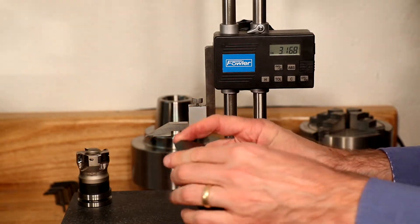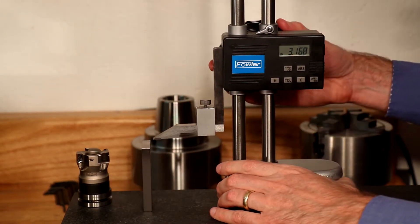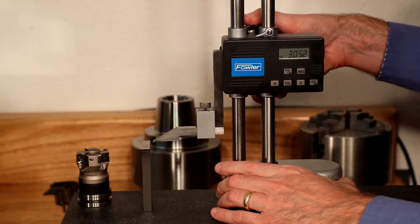I like to verify that I've properly zeroed the height gauge by comparing to a gauge block. At three inches, the height gauge should clear the gauge block.